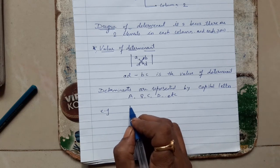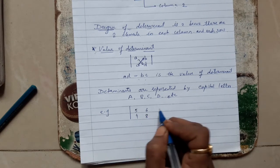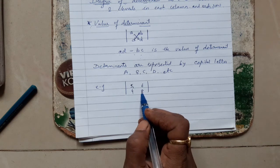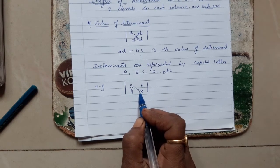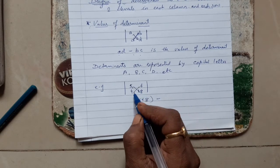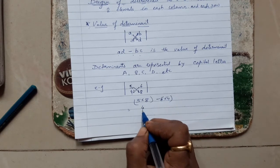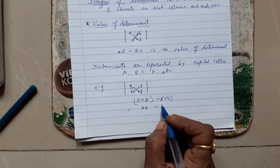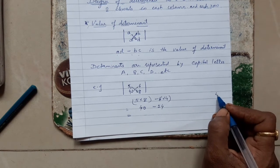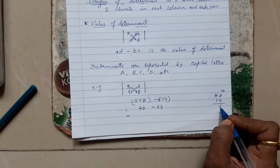How will you find out this value? This is a, b, c, and d. So a into d means 5 into 8 minus 6 into 4. How much will you get? 5 into 8 is 40, 6 into 4 is 24. So what is your answer? 40 minus 24. 10 minus 4 is 6, 3 minus 2 is 1, so your answer is 16.